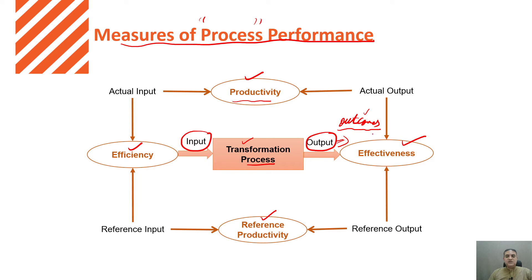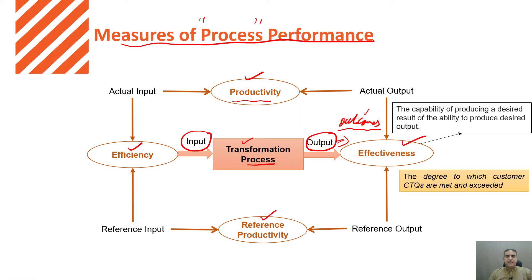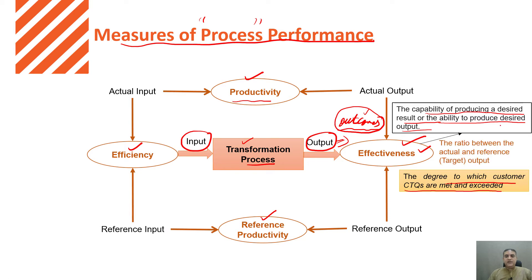We have to meet the specification of the customer, which means that is related to the output. Effectiveness is basically the capability of producing a desired result, or the ability to produce the desired output. Another way to define effectiveness is the degree to which the customer's critical-to-quality requirements are met or exceeded. We are talking about getting the output according to the requirement of the customer. To calculate effectiveness: actual output divided by the reference or target output.